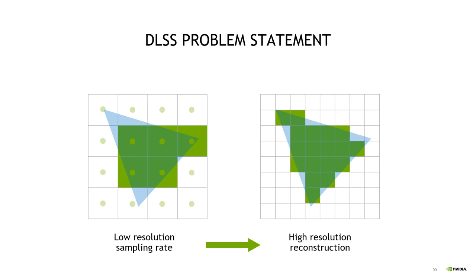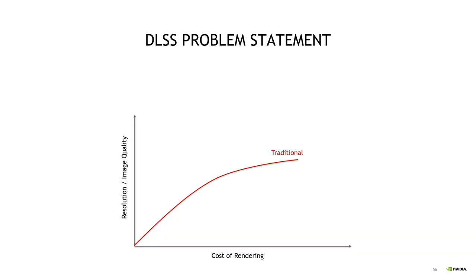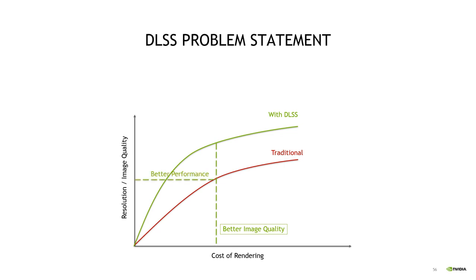With that background in mind, we can look at the problem statement of DLSS. DLSS tries to achieve the same high-resolution reconstruction quality using only input taken from a low-resolution sampling rate. Both things matter: reconstruction quality directly correlates to final image quality, and sampling rate directly correlates to performance. In graphics there's a positive correlation between image quality and rendering cost — to get better image quality you either render at higher resolution or use more expensive rendering techniques. We hope with DLSS we can just increase the efficiency of the rendering process.